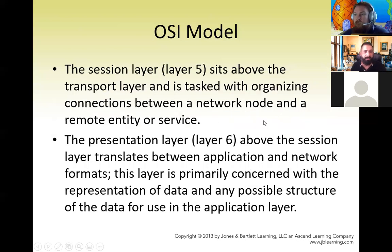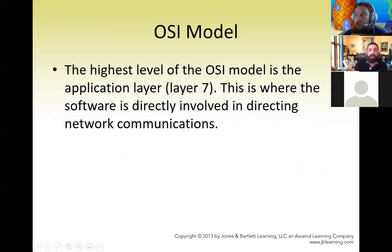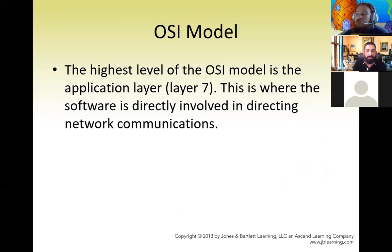Layer 5 — the Session Layer — sits above the Transport Layer and organizes connections between a network node and a remote entity or service. Layer 6 — the Presentation Layer — translates between application and network formats, primarily concerned with data representation and structure. Layer 7 — the Application Layer — is the highest level of the OSI model, where software is directly involved in directing network communication.